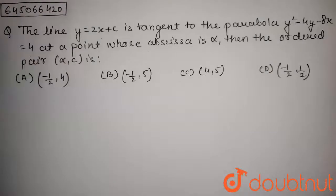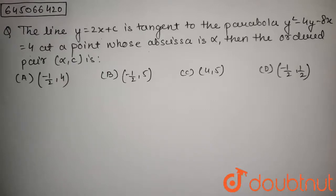The question is: the line y = 2x + c is tangent to the parabola y² - 4y - 8x = 4 at a point whose abscissa is alpha. Find the ordered pair (alpha, c).